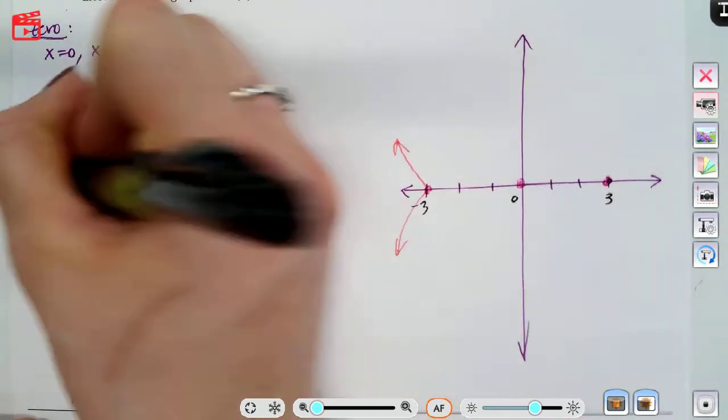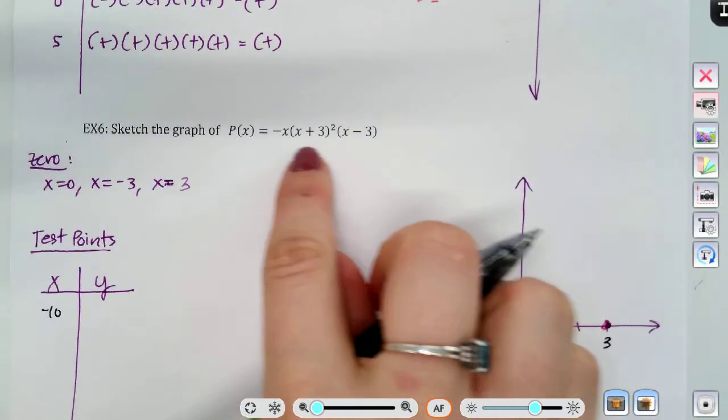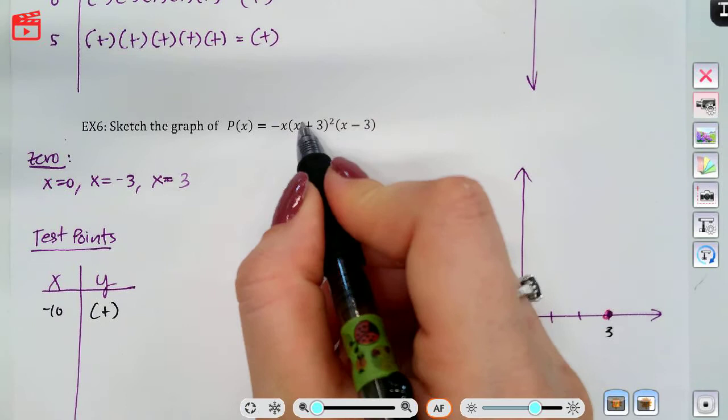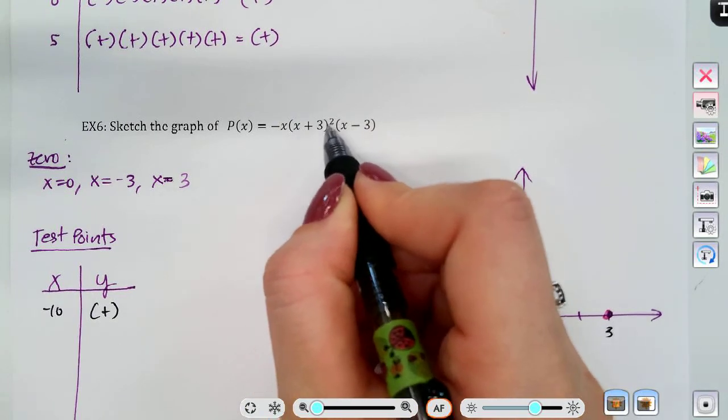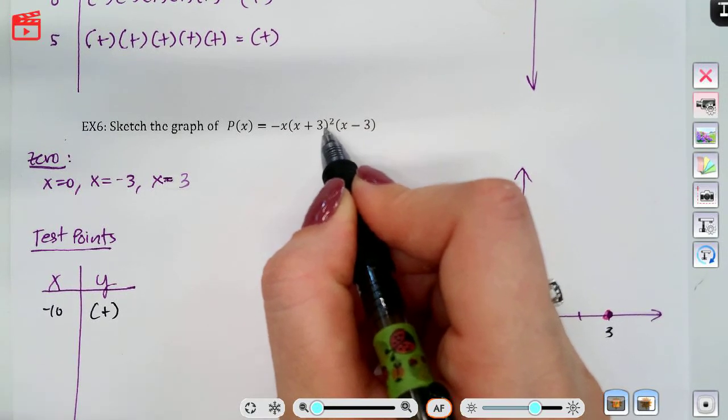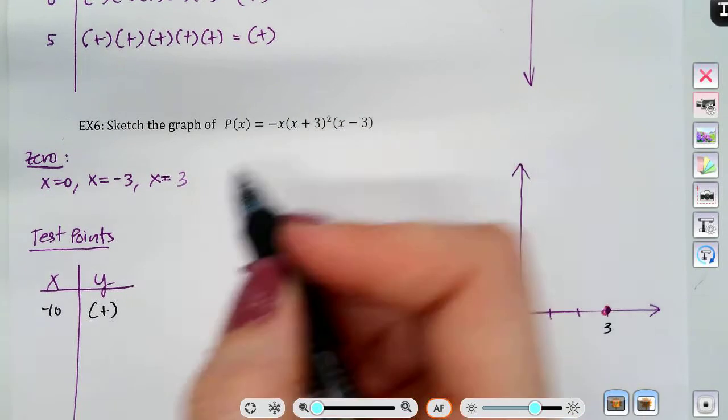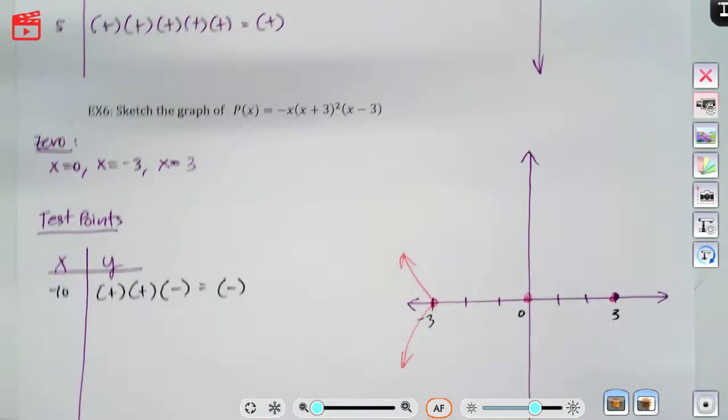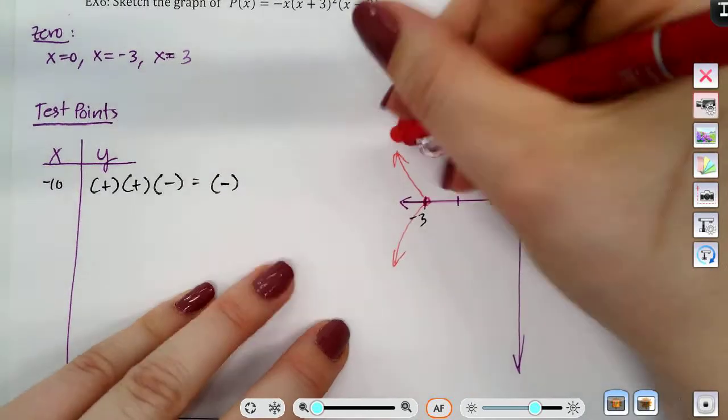Okay, I'm going to pick the test point negative ten, so plugging that in here to my options, that's going to be positive. Oh, interesting, anything I put into here, since I'm squaring it, it'll always be positive. So that second term, regardless of what the sign is, the number that I throw in there, it's going to be positive, because it's being squared. Okay, so that'll be positive. And then it'll be negative, so the sign is going to be negative.